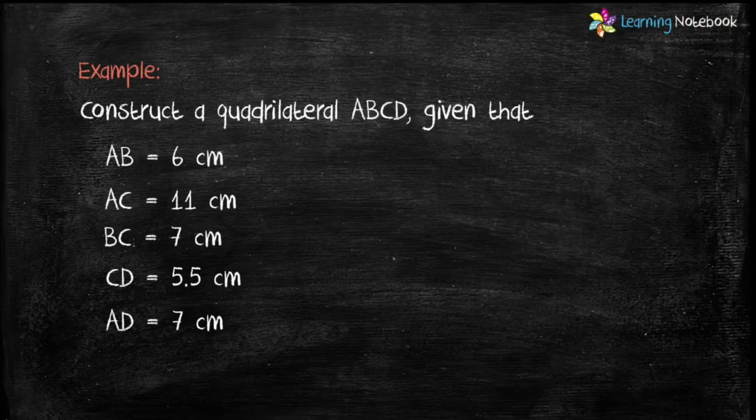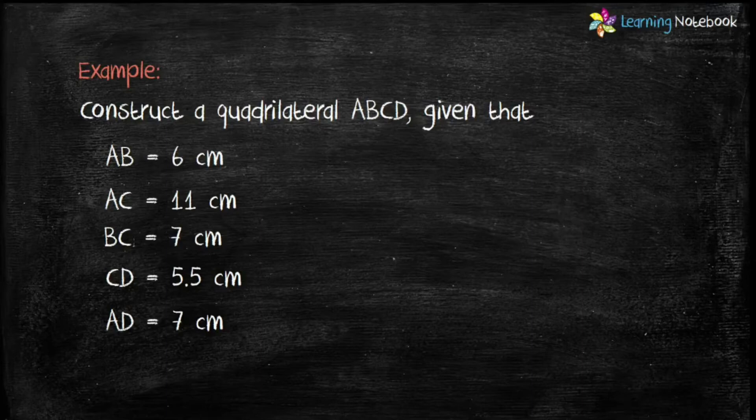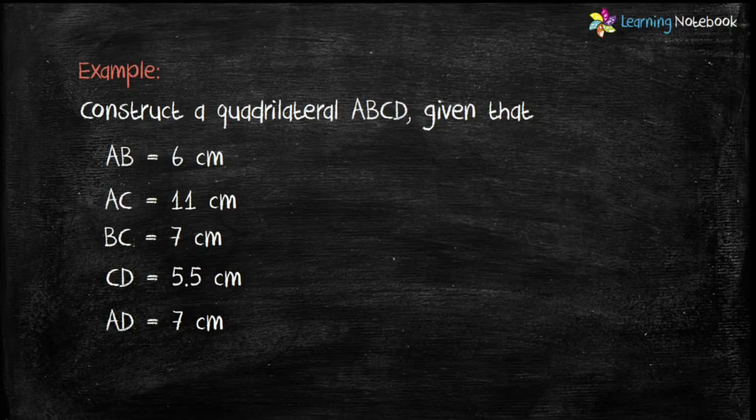CD equals to 5.5 cm and AD equals to 7 cm. Students, first we have to identify the sides and diagonals of quadrilateral. We have to construct quadrilateral ABCD.